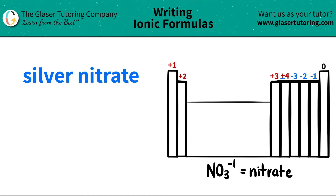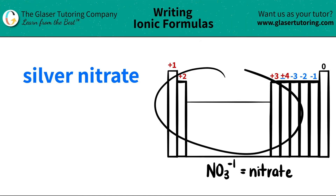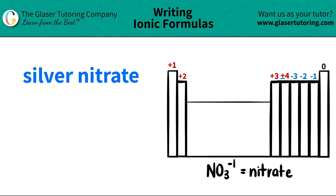The first thing that I see is silver. So I'm going to scan the periodic table to see where silver is. Silver is right about here on the periodic table. It's represented by Ag. So that's the first thing — silver is Ag.